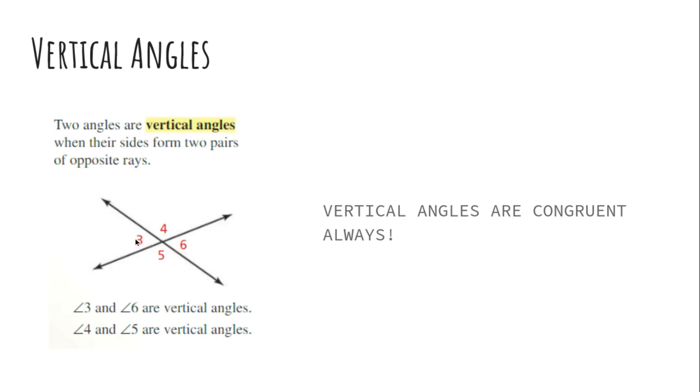Okay, so vertical angles are always congruent. It means they're the same size, same shape. So write this down.